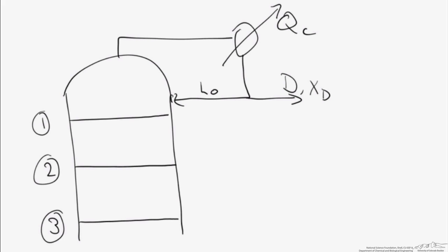Here we're going to be focusing on the top part of the column. The column fundamentally works by using vapor-liquid equilibrium to separate materials, but as we have multiple trays and multiple stages, we have multiple places that this vapor-liquid equilibrium exists. So if we look at this first stage, we're going to have the compositions coming off that first stage be Y1 and X1, and that top tray is going to be tray number one.